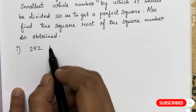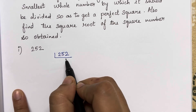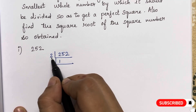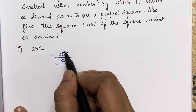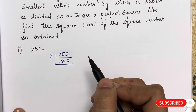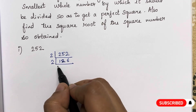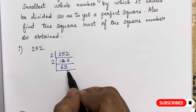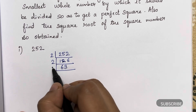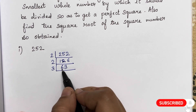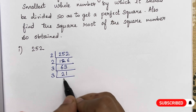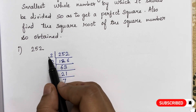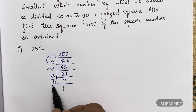First let's find the prime factors of 252. This is an even number so we'll divide by 2. 252 divided by 2 gives 126, divided by 2 gives 63. Now 63 is an odd number so it won't go by 2. It is divisible by 3: 63 divided by 3 is 21, and 21 divided by 3 is 7. And 7 is divisible by 7, one time.